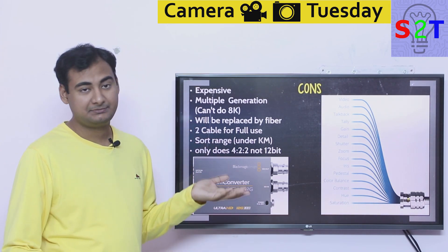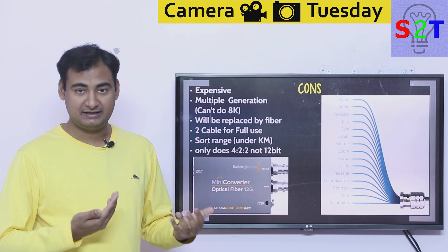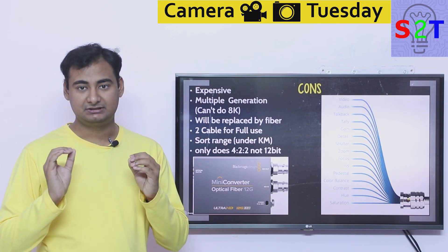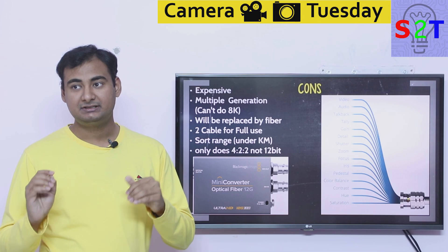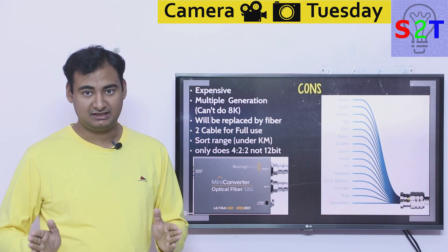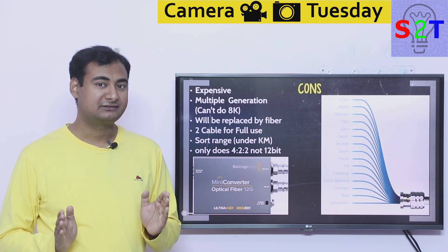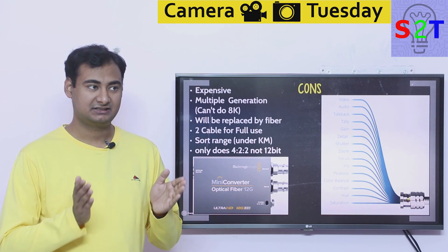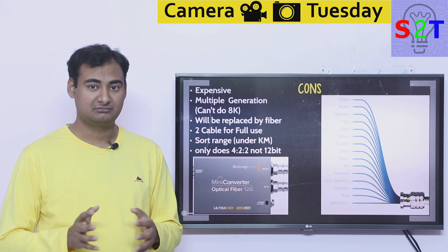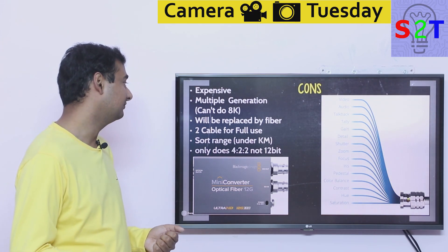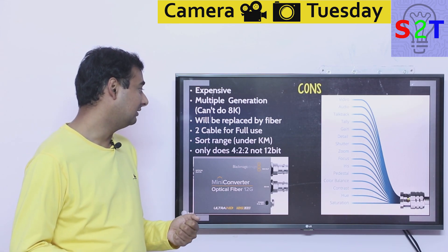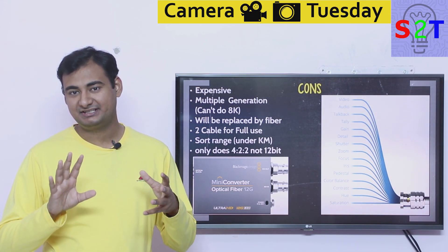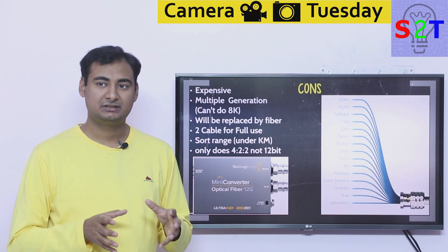Multiple generations of SDI also create a consequence: the highest current standard, 12G-SDI, cannot transmit 8K. And there are many 8K film cameras available today, so transmitting that over SDI is a real limitation.